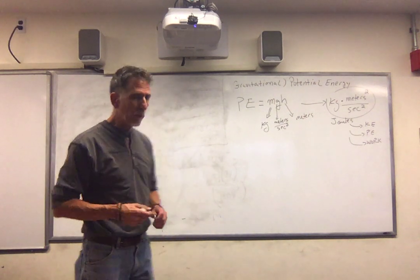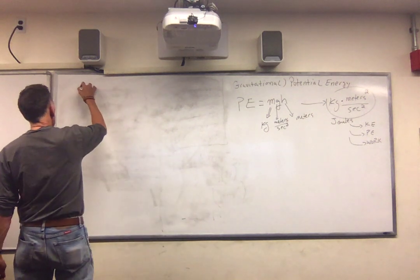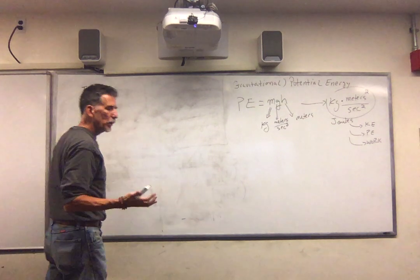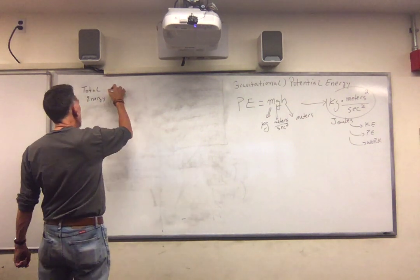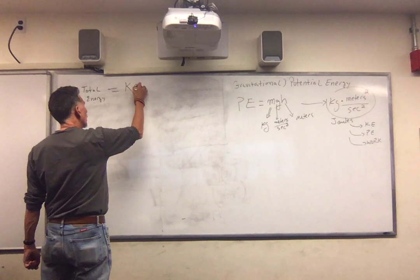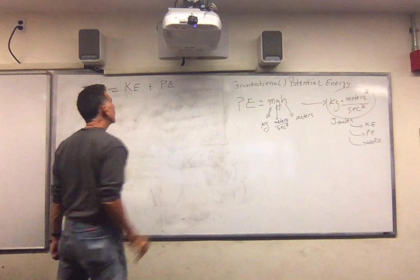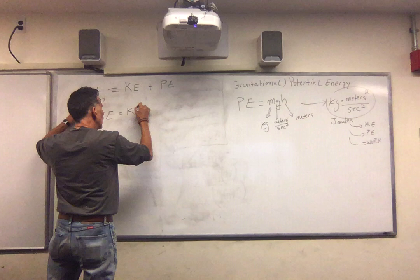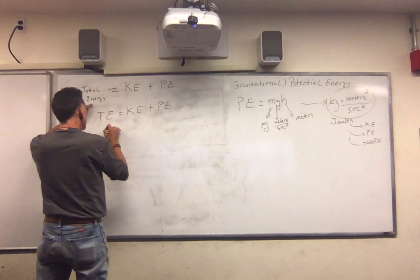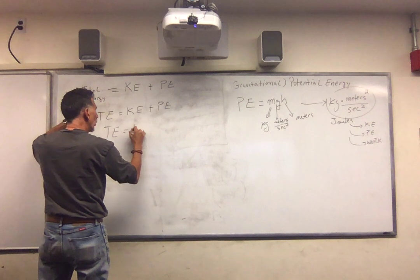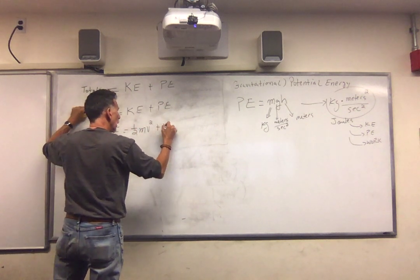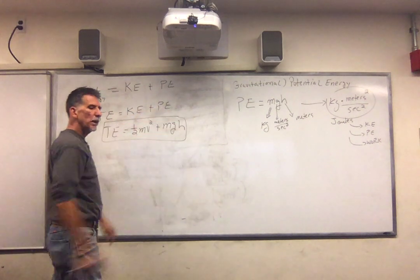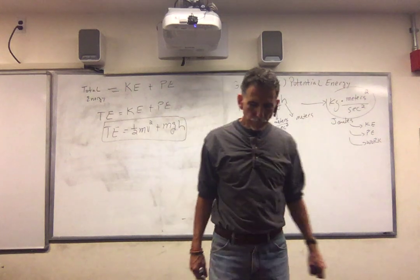What I want to do now is I want to define something that I'm going to call total energy. Total energy is really total mechanical energy, but that's okay. I'm going to define it to be the kinetic energy plus the potential energy. So, watch. Here's my equation. TE is KE plus PE. If I put in the expression, one-half mv squared plus mgh. All I did was combine kinetic energy and potential energy.